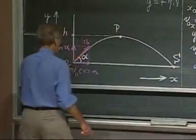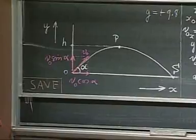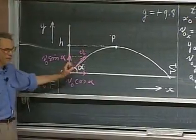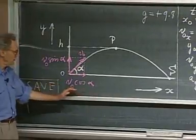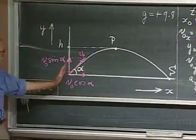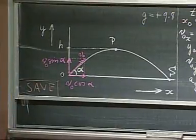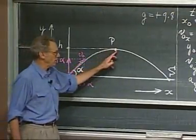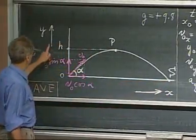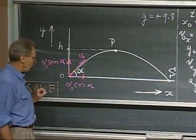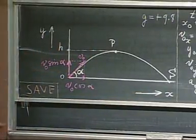We have here a trajectory of a golf ball or a tennis ball in 26-100. We shoot it up at an angle alpha. The horizontal component in the x-direction is V0 cosine alpha, and the vertical component is V0 sine alpha. It reaches the highest point at P and it returns to the ground at point S. This is the increasing y-direction and this is the increasing x-direction.